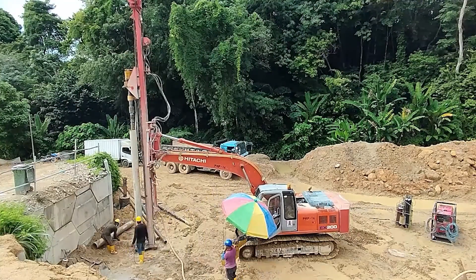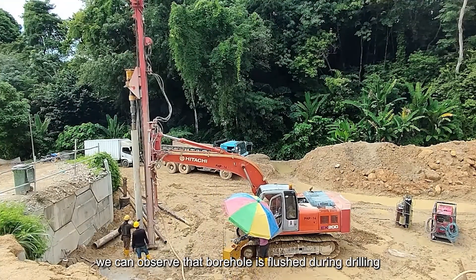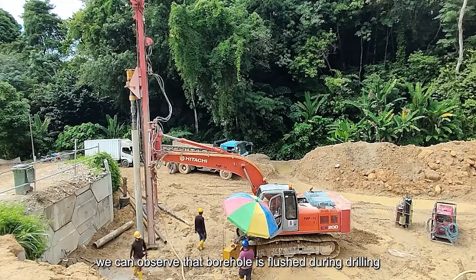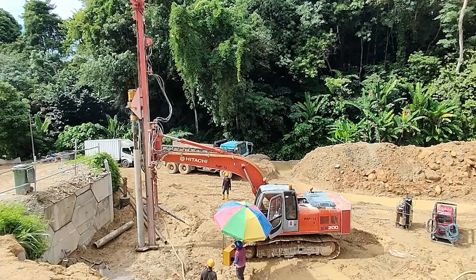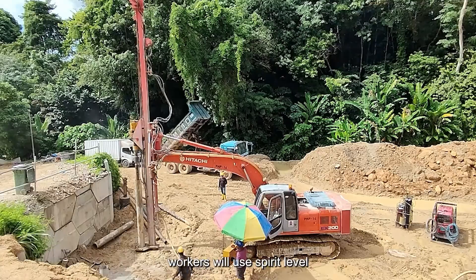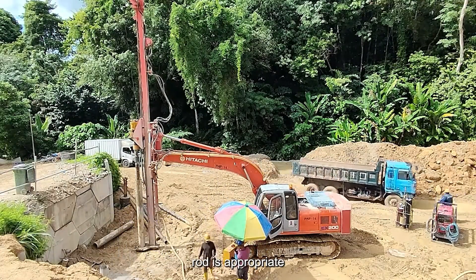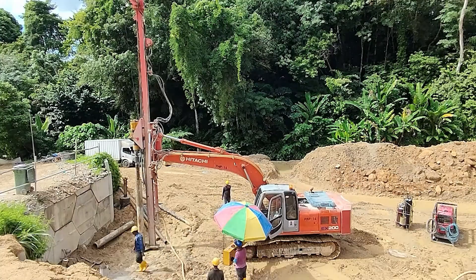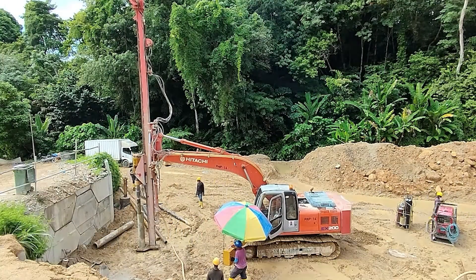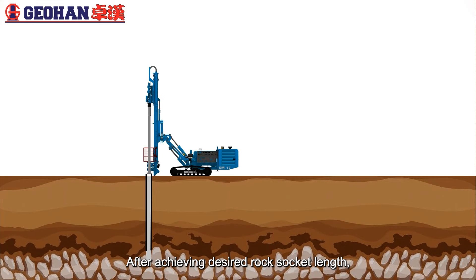From the video, we can observe that borehole is flushed during drilling. When drilling the hole, workers will use spirit level to measure and ensure the verticality of drilling rod is appropriate. After achieving desired rock socket length, drilling rod will be lifted up. Drilling machine is then moved away.